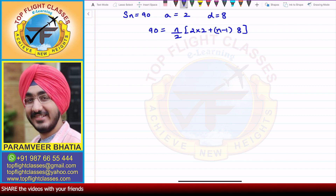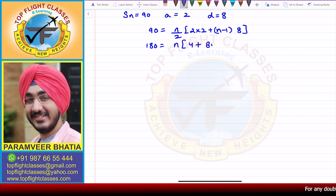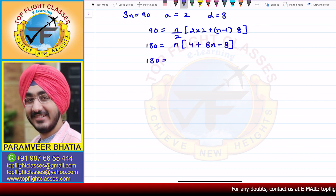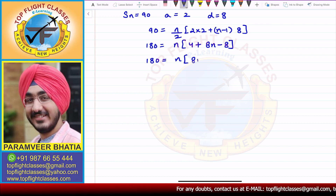From here, I get 180 = N times (4 + 8N minus 8), which simplifies to 180 = N times (8N minus 4).